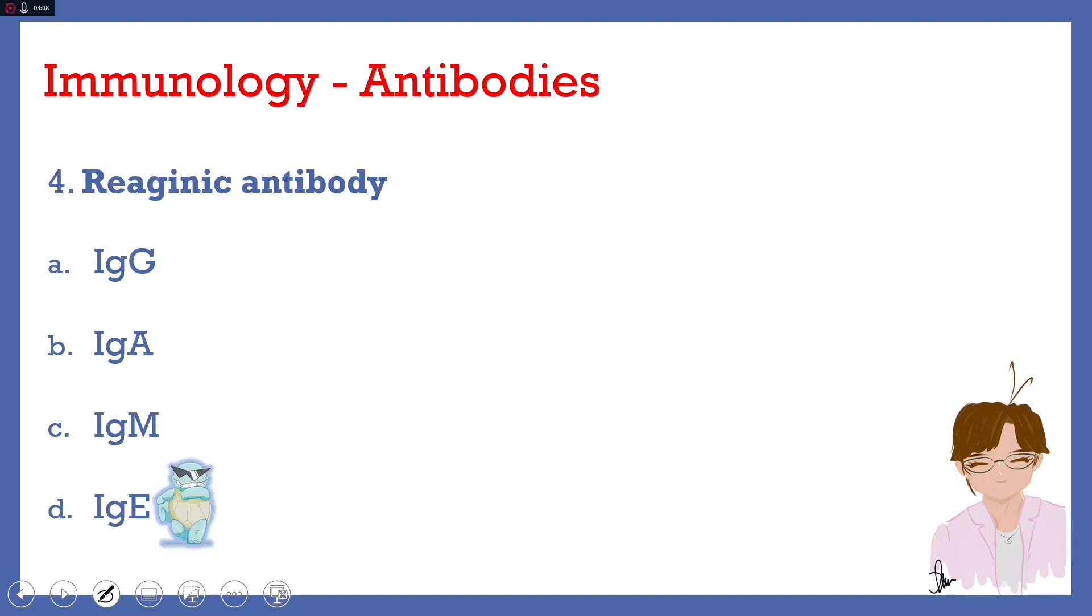IgE is formerly known as the reagenic antibody. But please remember that this is not the same antibody that we see in syphilis. Conversely, the reagenic in syphilis does not mean that it is made up of IgE molecules. They are two separate antibodies. It just so happened that the former name of IgE is reagenic antibody. Reagenic antibody IgE, by the way, plays a role in mediating the hypersensitivity reaction. When it reacts with the effector cells, basophils, and mast cells, they will mediate the hypersensitivity reactions.